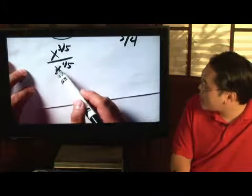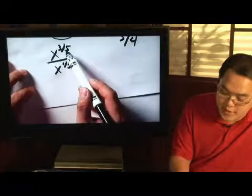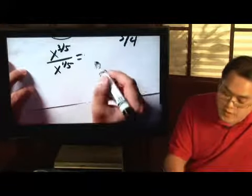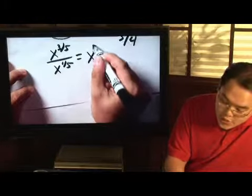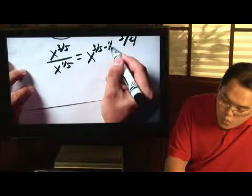Now if they're right on top of each other, same base, you can subtract the exponents. And because of the same denominator, that's even better. So you will have x to the three-fifths minus one-fifth.